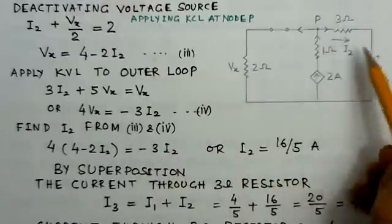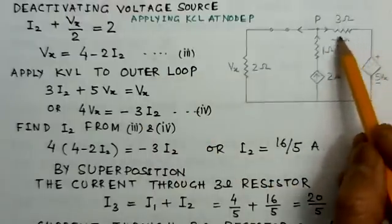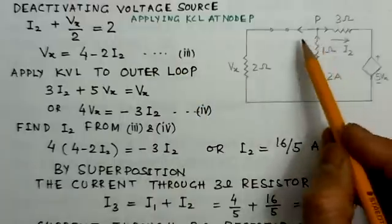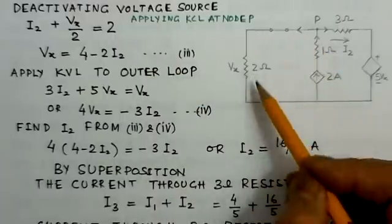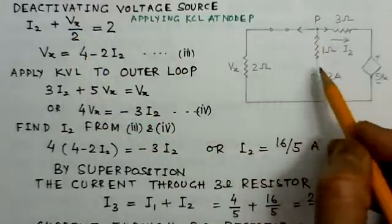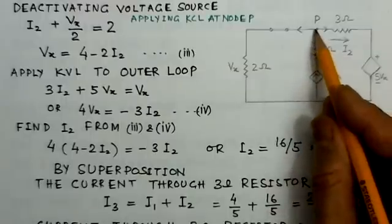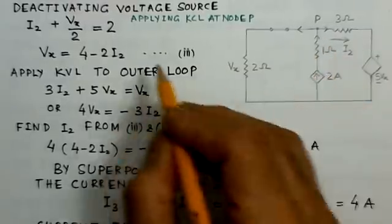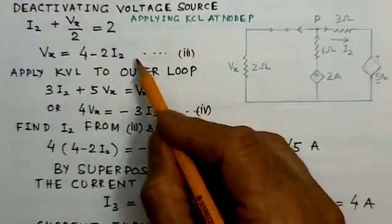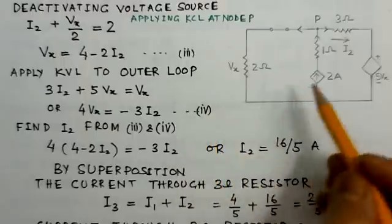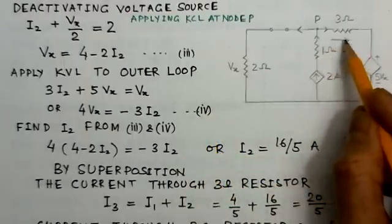This is I2. I2 is the current going out of the node. I2 plus Vx by 2 is also current going outside node P. And this is current entering the node. So this equals 2. We get an equation Vx equals 4 minus 2I2.